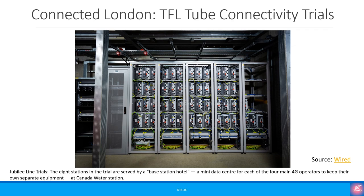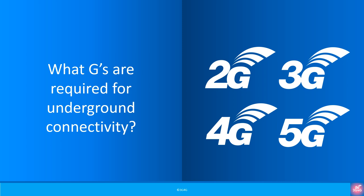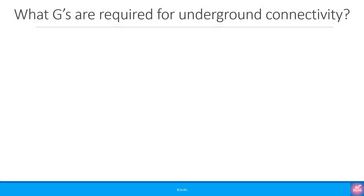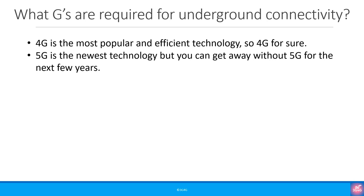As connectivity becomes better in the next few years, we should have a lot more information available. The question everybody asks is: why bother putting 2G, 3G or 4G? If the new underground network is being rolled out, why not just put 5G? The answer is not that simple or straightforward. 4G is the most popular and the most efficient technology — if you want to have a network that covers most devices and people, then you need 4G for sure.